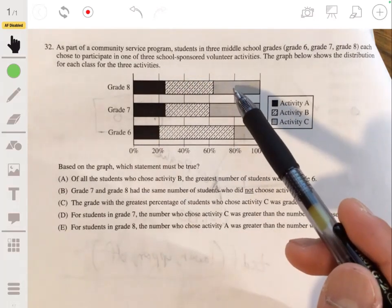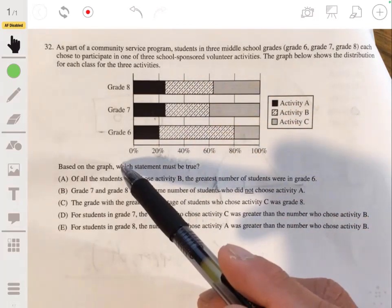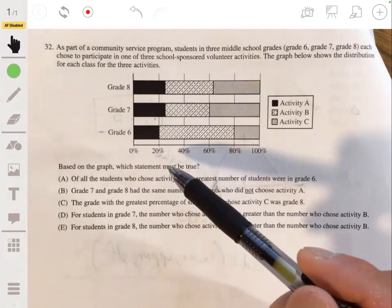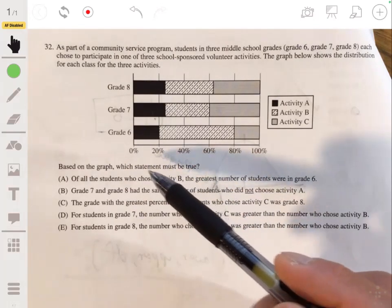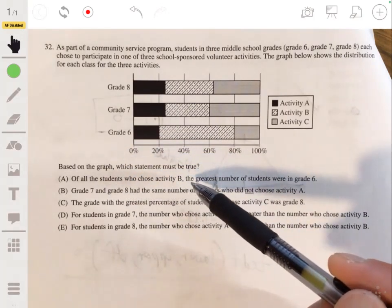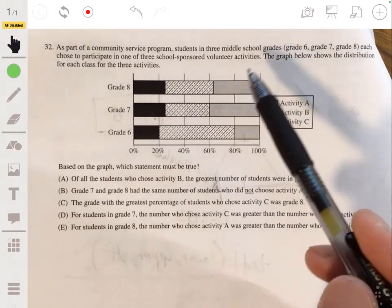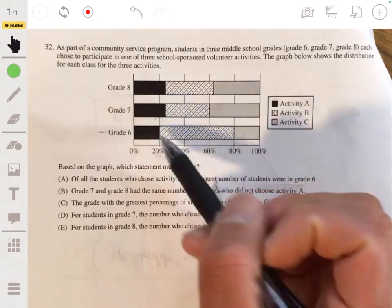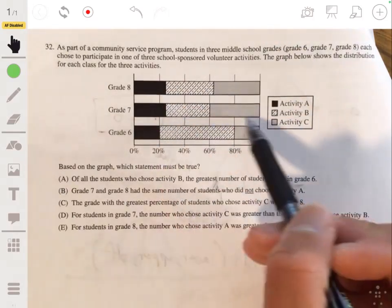All right, I wonder what they are, but okay. Based on the graph, which statements must be true? Okay, we got to read these. All right, of all the students who chose activity B, the greatest number of students were in grade six. Okay, so we can't say that because we're not given counts, we're given percents.